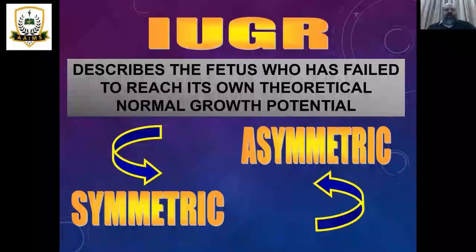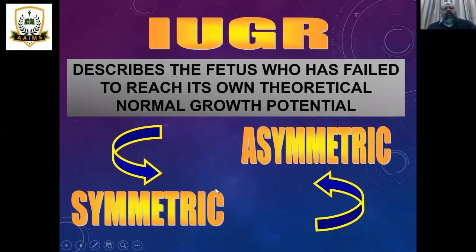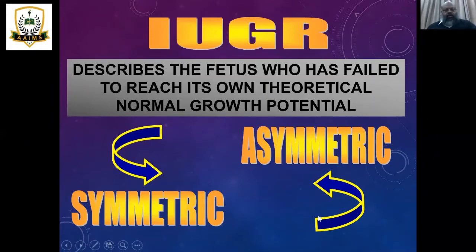Intrauterine growth restriction (IUGR) describes a fetus that has failed to reach its own theoretical normal growth potential. It can be mainly of two types: symmetrical and asymmetrical, also referred to as symmetric or asymmetric IUGR.